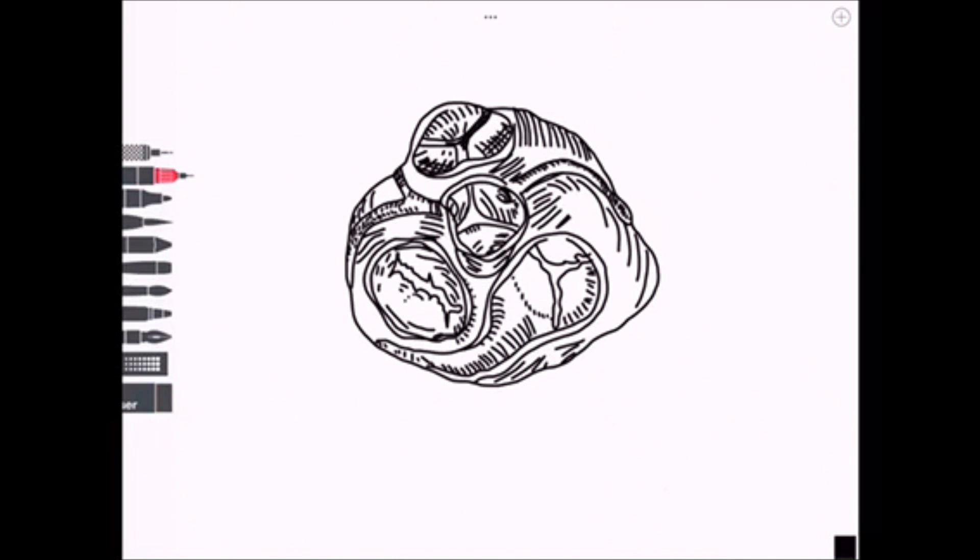So the cardiac skeleton is dense fibrous connective tissue. It forms four rings around each of the valves and it surrounds the atrioventricular orifice, the aortic orifice and the opening of the pulmonary trunk.